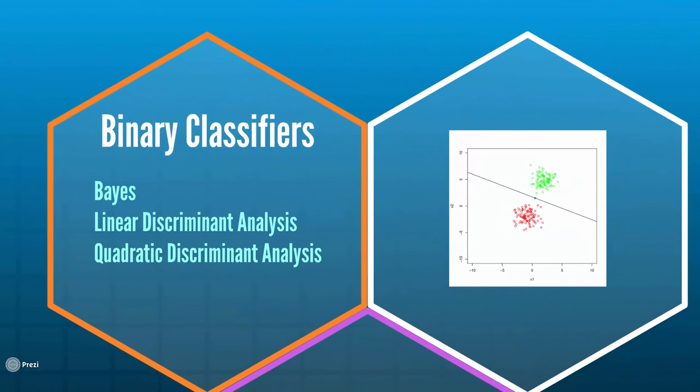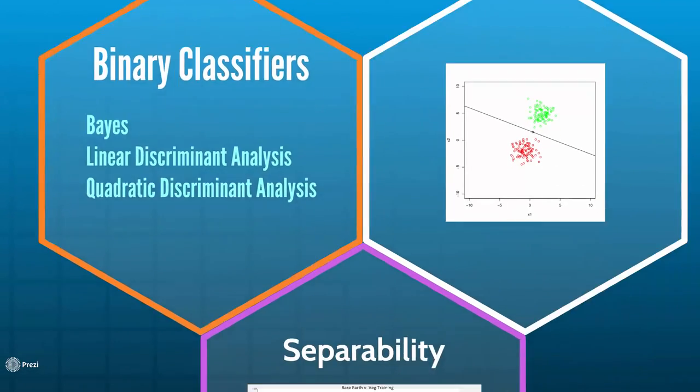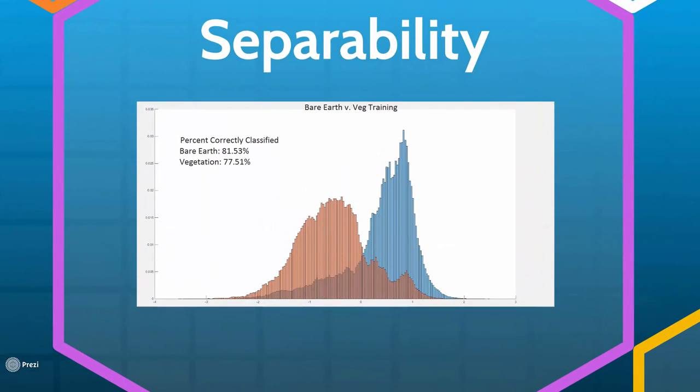These classifiers work by trying to find the line that best separates the data. Here is a histogram of the data projected into the optimal one-dimensional space by LDA. If the data were linearly separable, there would be no overlap between the two colors. However, there is significant overlap between the distributions, indicating that the data is not linearly separable. So these classifiers will not perform very well.